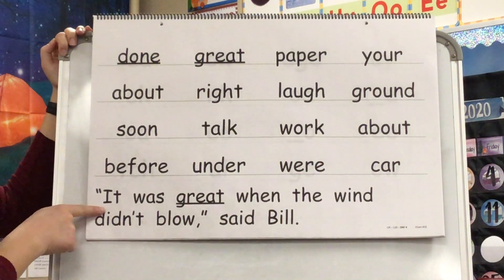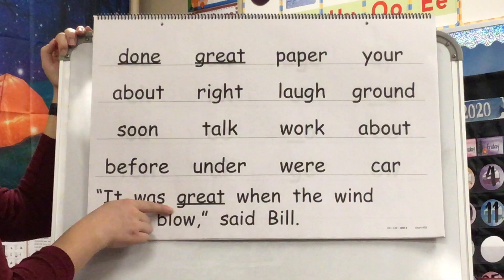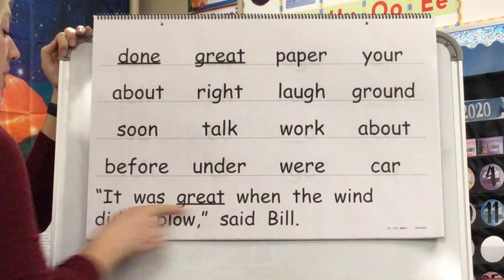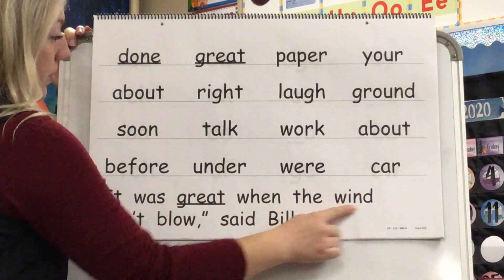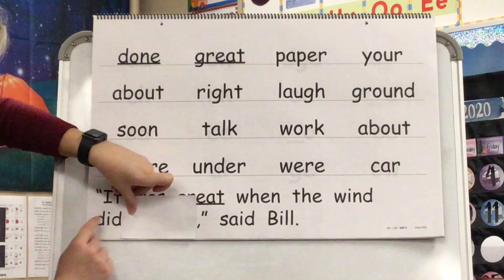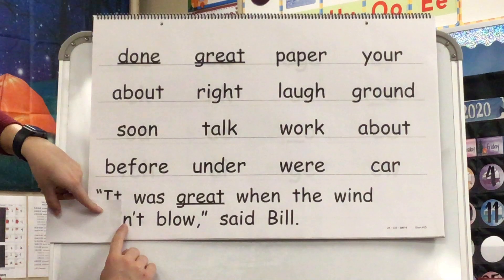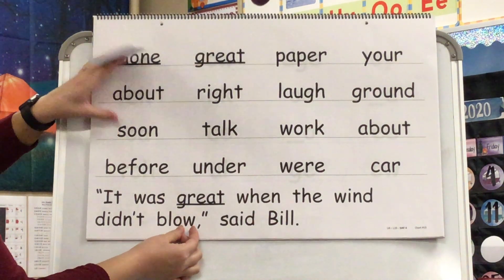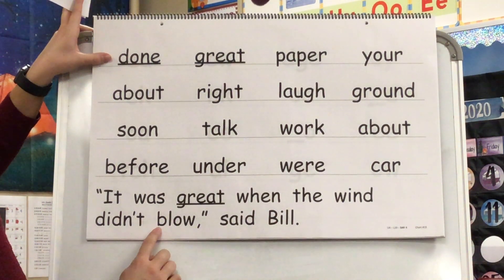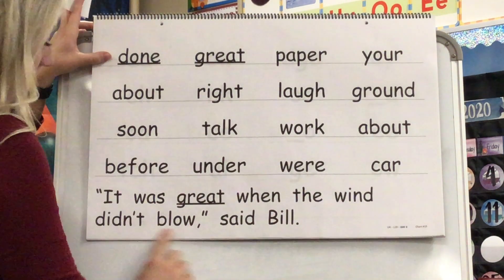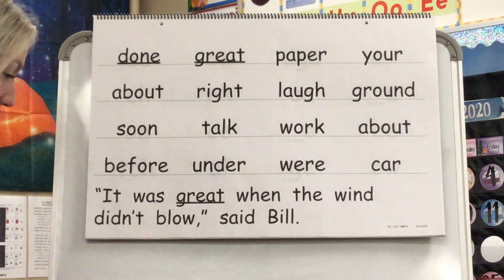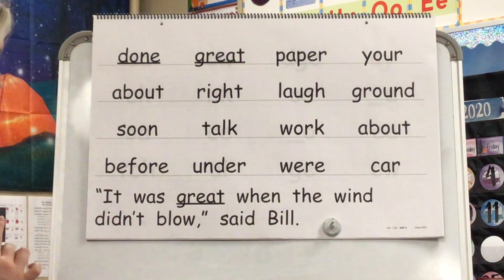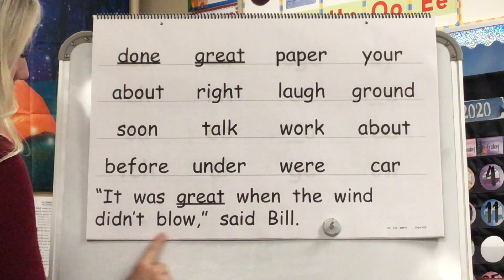Let's read our sentence. Word: It. Word: Was. Word: Great. It was great. Word: When. Word: The. It was great when the. Word: Wind. Word: Did. Blend: Nnt. Contraction: Didn't. It was great when the wind didn't. Sound: O. Blend: Blow. Word: Blow. It was great when the wind didn't blow. Word: Said. Word: Bill. It was great when the wind didn't blow, said Bill. Your turn: It was great when the wind didn't blow, said Bill.